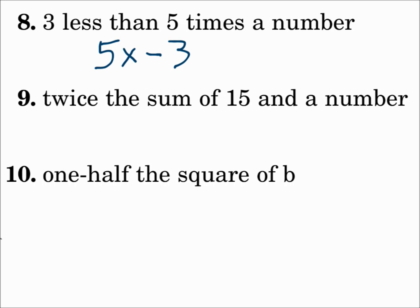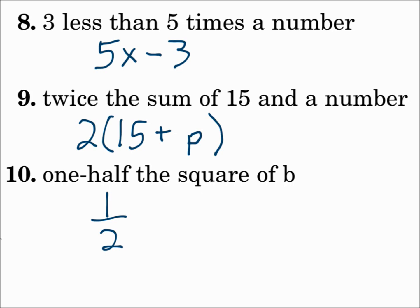Number nine: twice the sum of 15 and a number. Twice is two times something, and it's the sum of things — what is it the sum of? 15 and a number. So two times the quantity 15 plus p. Number ten: one half the square of b. One half times b squared. Since it says 'the square of b,' we definitely use the variable b.